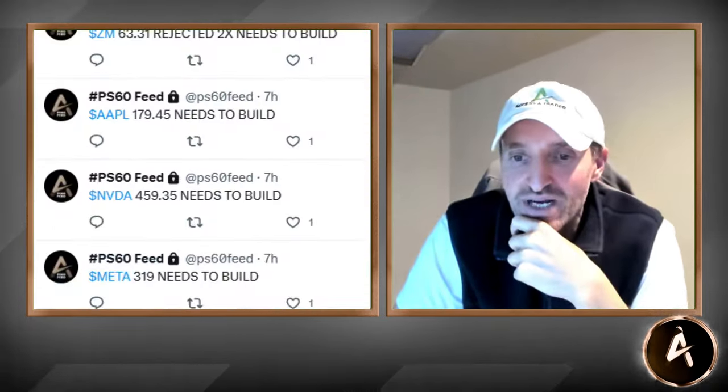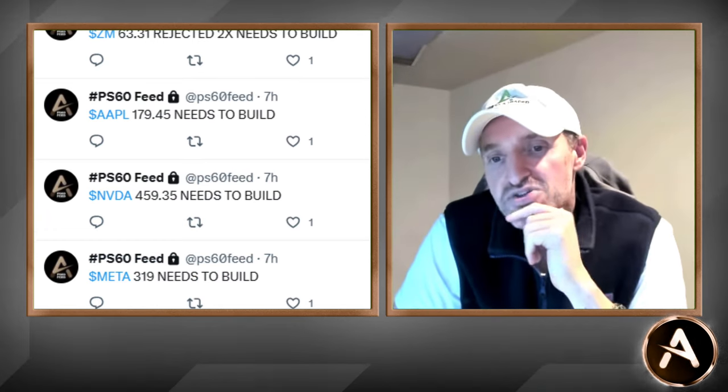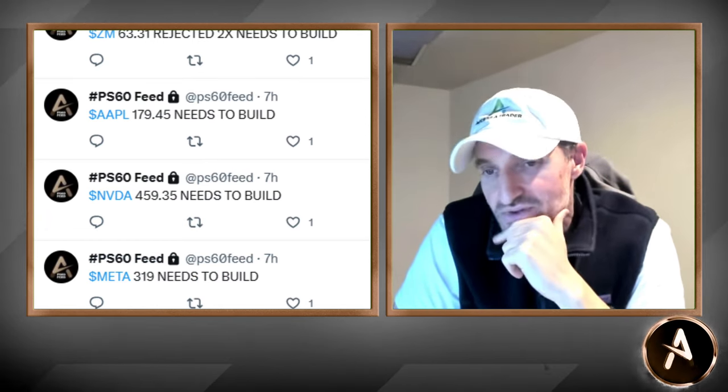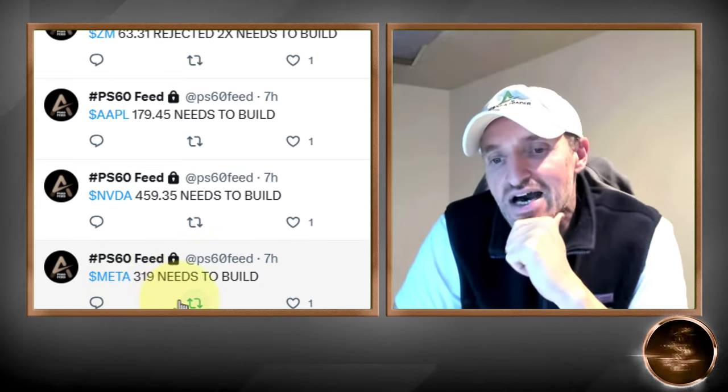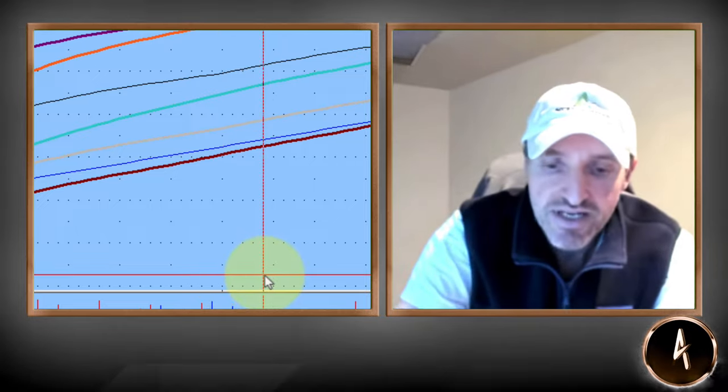Obviously if you traded today, there was a lot of really good aggressive price action — another series of higher highs and higher lows, just like we talked about in last night's video. Remember: if a stock wants to go higher, it needs to take out the previous day's high. If the stock wants to go lower, it needs to take out the previous day's low. The QQQs took out the previous day's high, started building off the channel, and went nuts again. Let's talk about today's pivots. Let's start off with Meta — 319 needs to build.